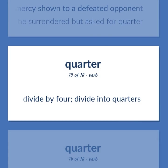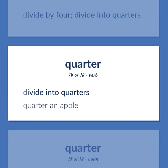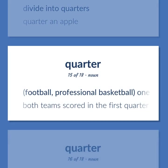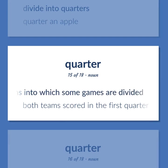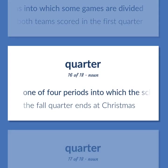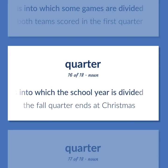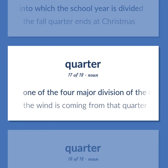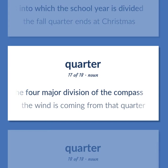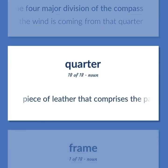Divide by four; divide into quarters — quarter an apple. Football and professional basketball: One of four divisions into which some games are divided — both teams scored in the first quarter. One of four periods into which the school year is divided — the fall quarter ends at Christmas. One of the four major divisions of the compass — the wind is coming from that quarter. Piece of leather comprising the part of a shoe or boot covering the heel and joining the vamp.